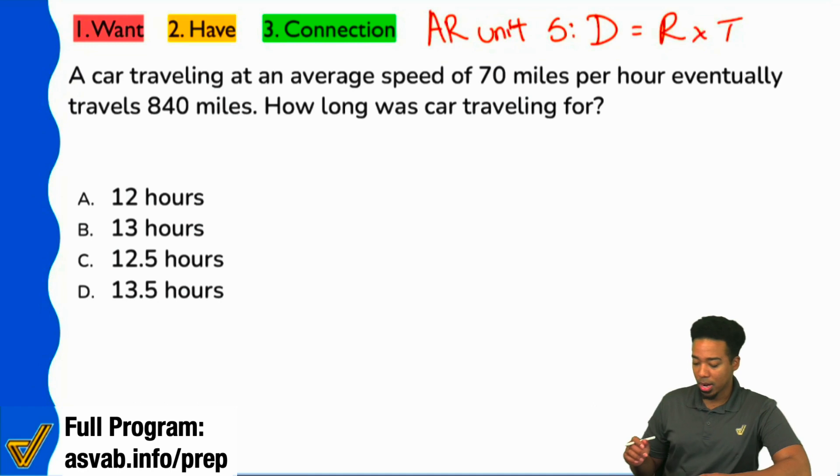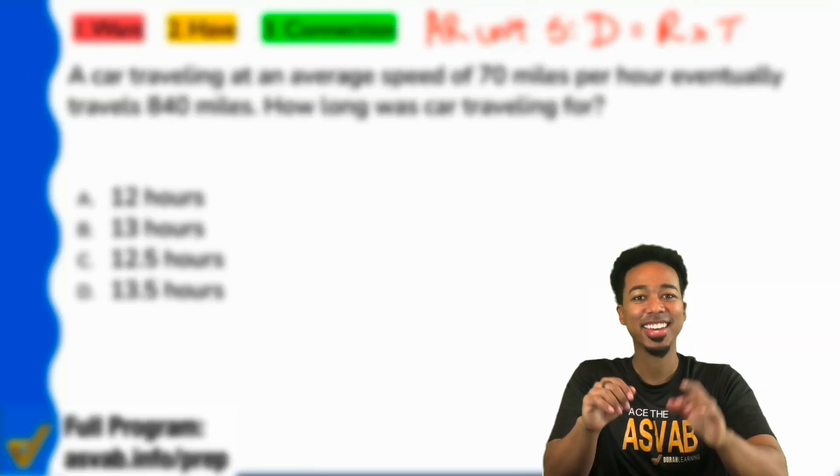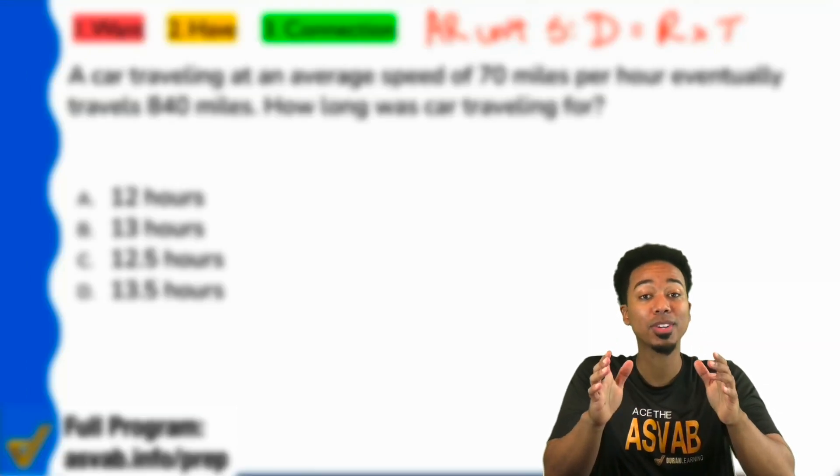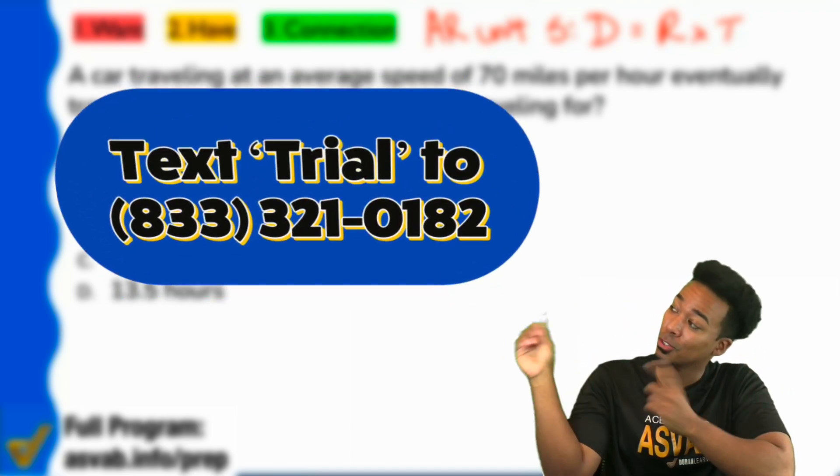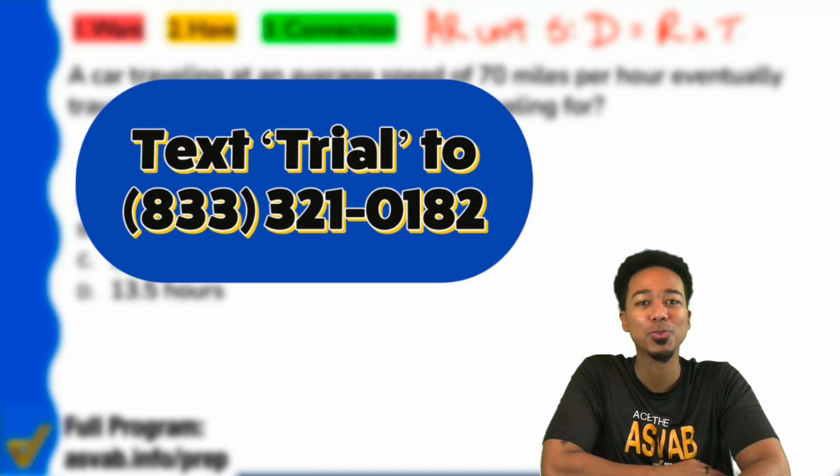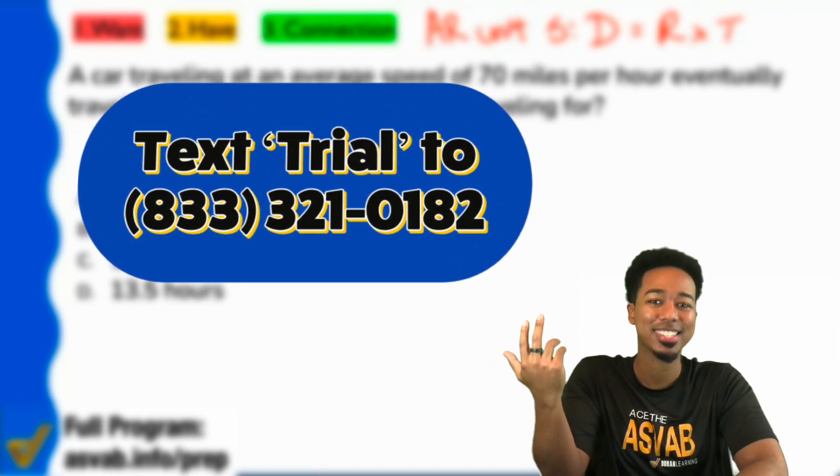There's just one thing that you need to know about these types of questions and how to know that you're dealing with distance equals rate times time. Anytime that a rate is mentioned, it's some form of distance, rate, and time. And before you continue, just remember, you can get a free week to our full program. No credit card required. Text trial to 833-321-0182. Get a free week. Join all the classes and raise your score.